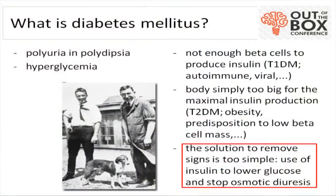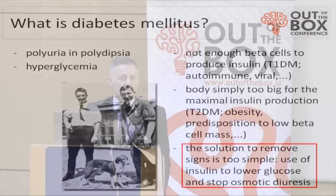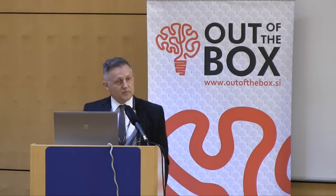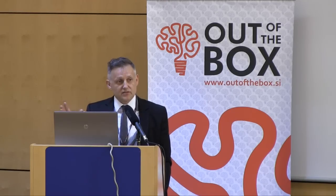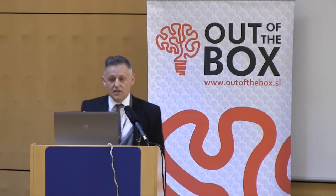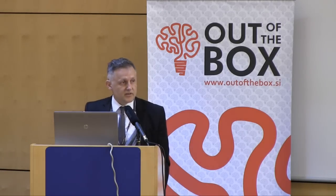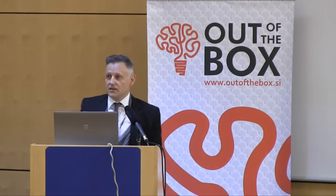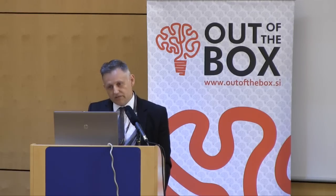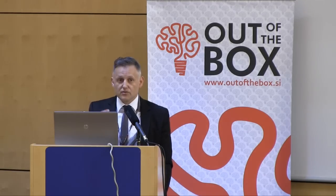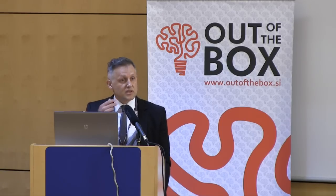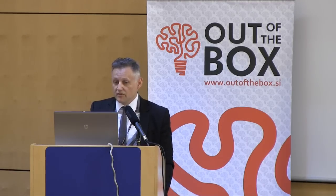So, let us first define what diabetes mellitus is. It presents with polyuria and polydipsia — the patient produces a lot of urine, and because they produce a lot of urine, they have to drink a lot. It is related to hyperglycemia, so the urine is sweet, and that's how we developed this name. We have known it for many centuries, and we could also diagnose it for many centuries, because when the urine becomes sweet, the concentration of glucose is so high that we can taste it — and this was diagnostic for many years.